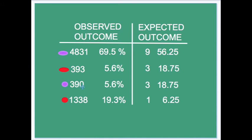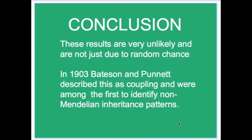Here you can see that the genotypes which require recombination in order to exist have a very low frequency of occurrence, and the genotypes which result from no crossing over have a very high occurrence. Bateson, Punnett, and Saunders realized that these results were very unlikely and not just due to some random experimental variation. They concluded that this may be due to what they termed coupling, and they were among the first to identify a pattern of non-Mendelian inheritance.